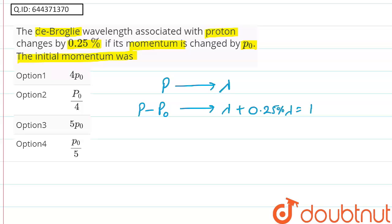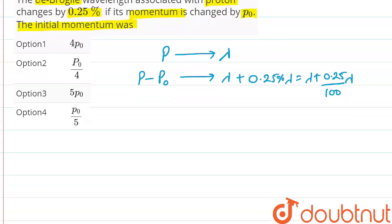That means it became lambda plus 0.25 upon 100 lambda. Now we will be using the formula of wavelength according to de Broglie: lambda is equal to h upon p, where p is the momentum.